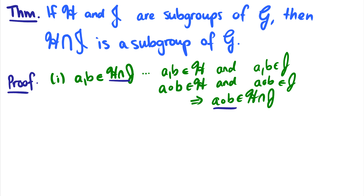The second thing to prove would be associativity, but associativity is pretty straightforward. If a, b, and c are in the intersection, then a, b, and c will be in each of h and j. They're both associative, therefore they'll be associative in the intersection as well.